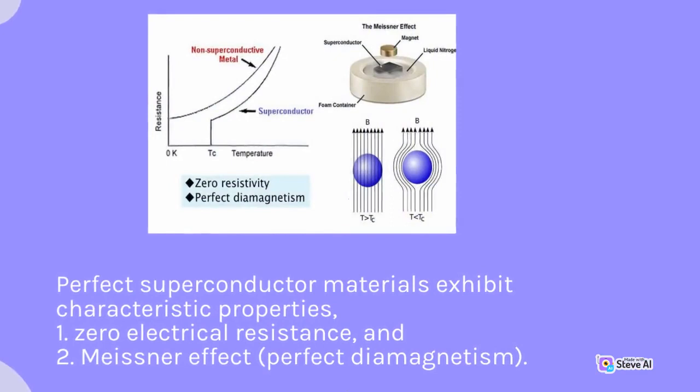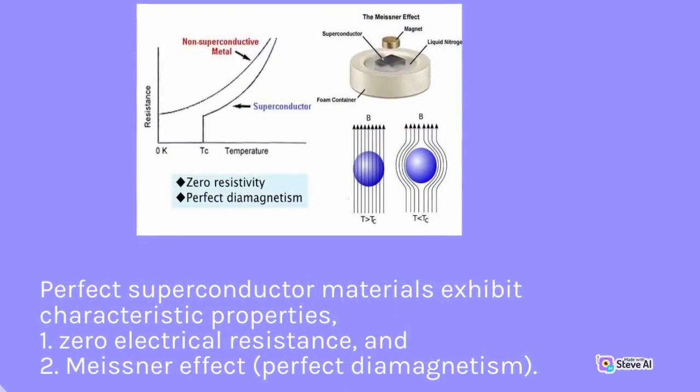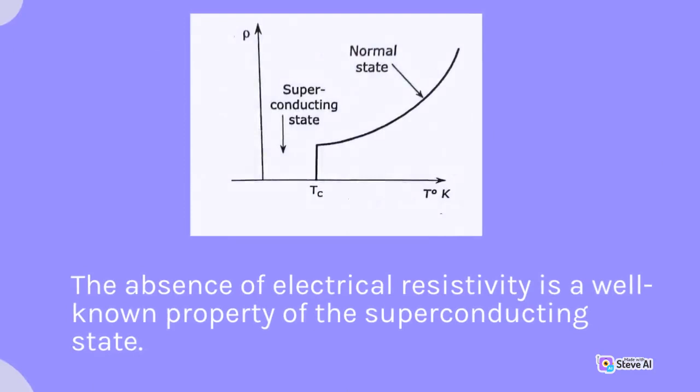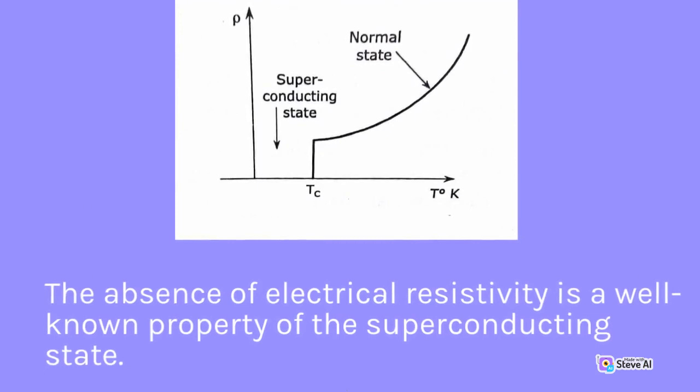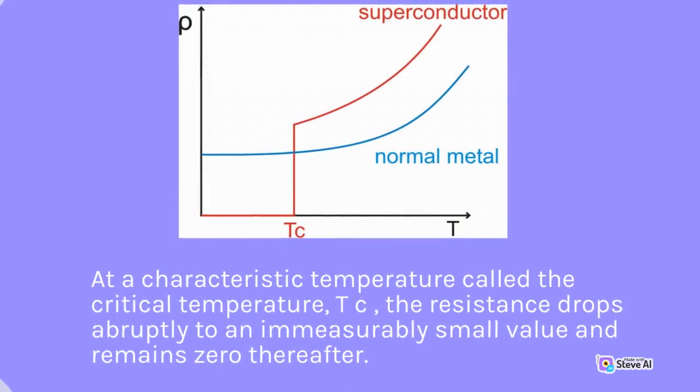Perfect superconductor materials exhibit characteristic properties. The absence of electrical resistivity is a well-known property of the superconducting state. At a characteristic temperature called the critical temperature, Tc, the resistance drops abruptly to an immeasurably small value and remains zero thereafter.